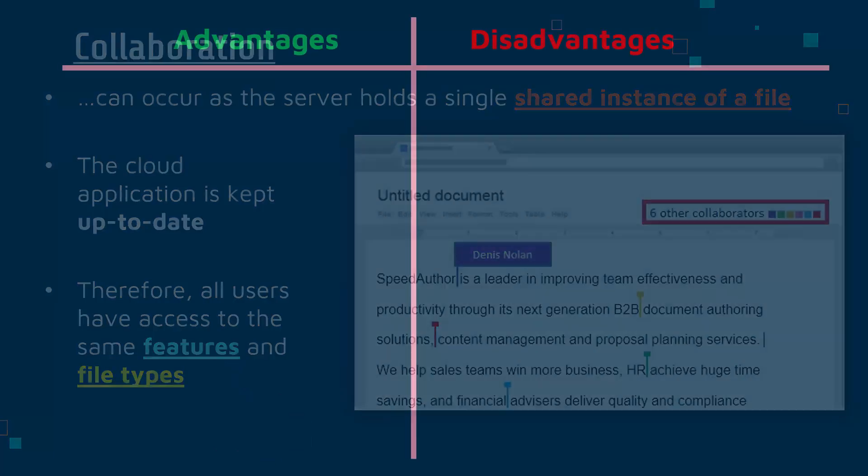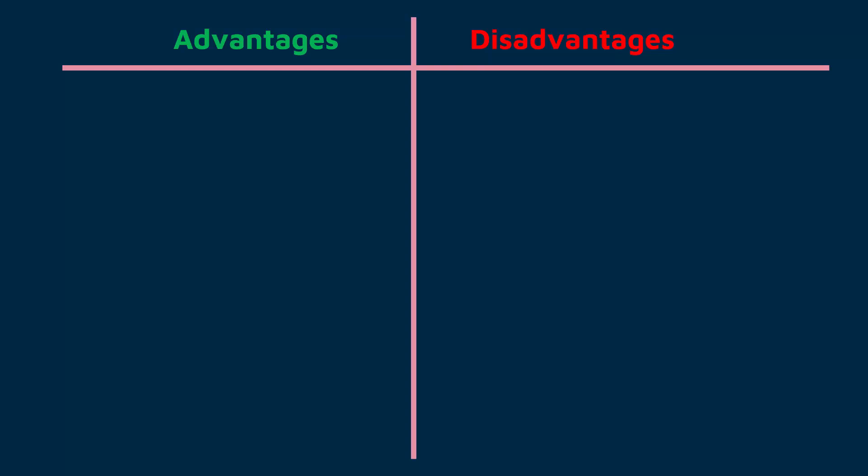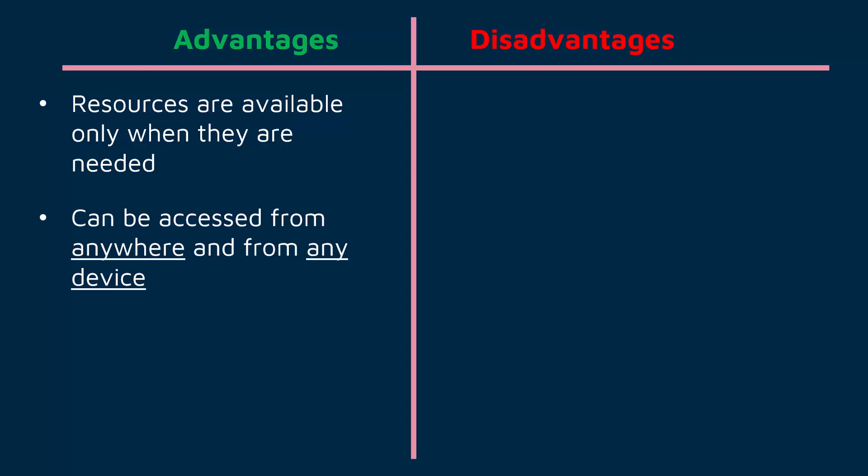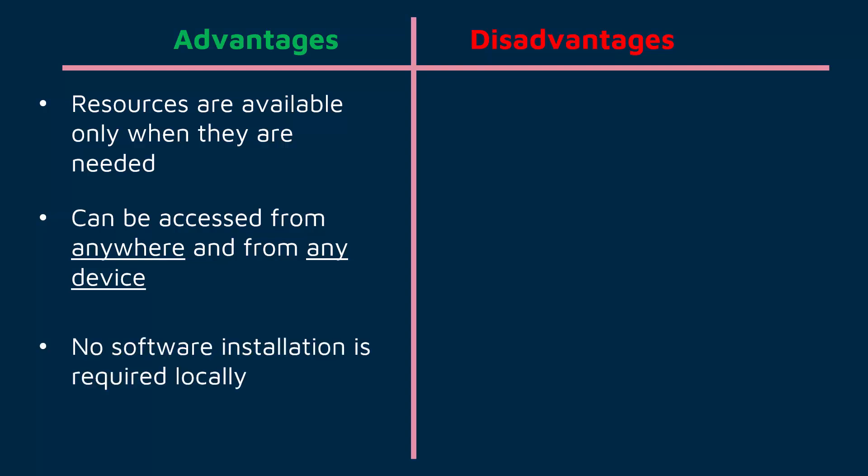Let's go through some pros and cons for cloud computing, similar to cloud storage. The on-demand aspect means you only access cloud computing when you need it and only pay for it when you use it. You can access it from anywhere and from any device — at home, at the office, while travelling — using the same applications from one cloud provider. Because the cloud provider handles most of the processing, you don't need to install software locally beyond just a web browser, which saves time and storage space and avoids compatibility issues. Collaboration is also a significant advantage.